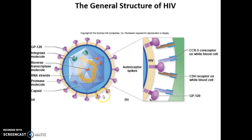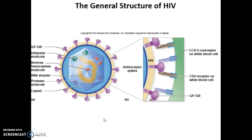Here is the reverse transcriptase, and here is a protease molecule that allows it to degrade proteins. All of these are very important. You also have proteins on the surface of the HIV virion — this one is called GP120, and another very important molecule called GP41. Both GP120 and GP41 are critical for a specific interaction with the host T cell.